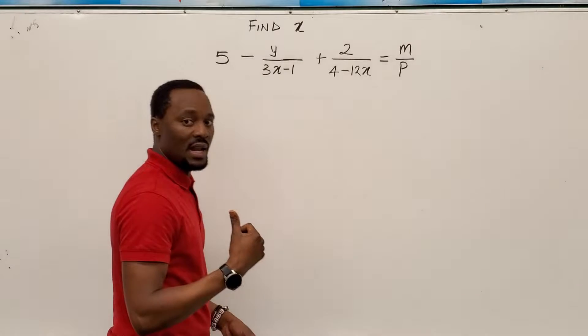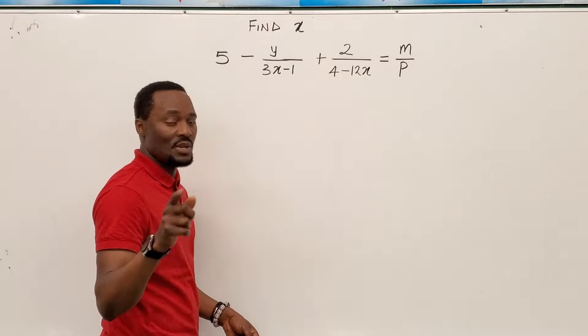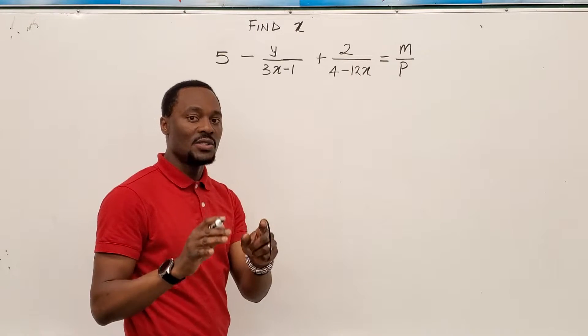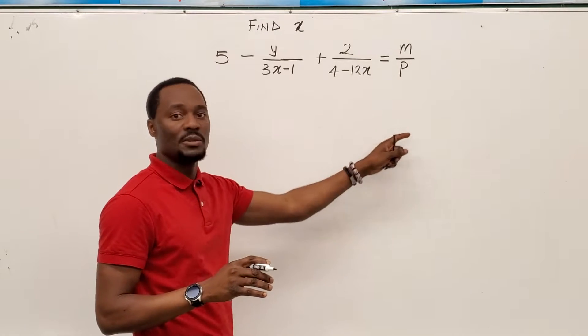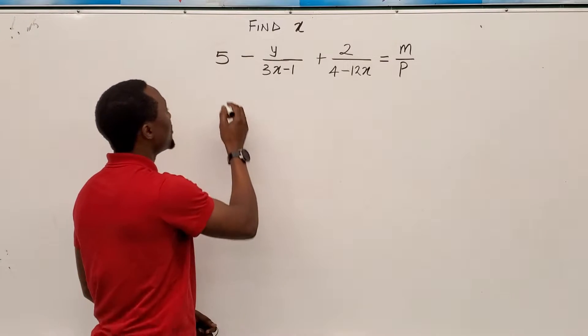Remember in my last video I said even if it's standing alone it's still a fraction because you can write it as 5 over 1. So let's do that first and consider how to find the least common multiple of an equation that looks so complex. Let's get down to it.